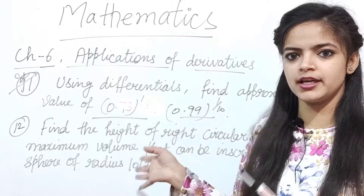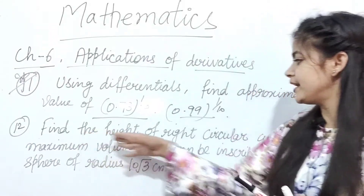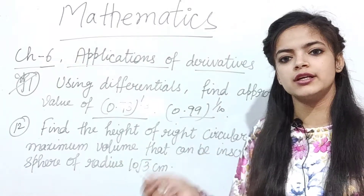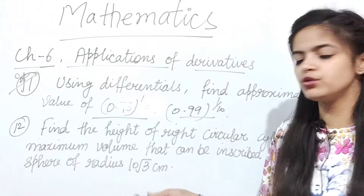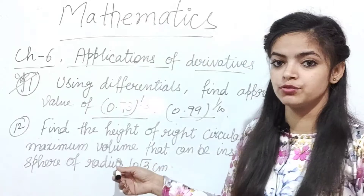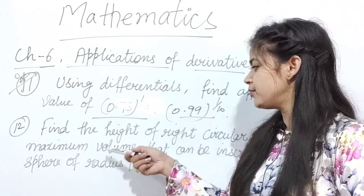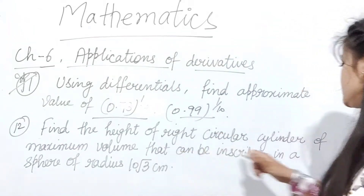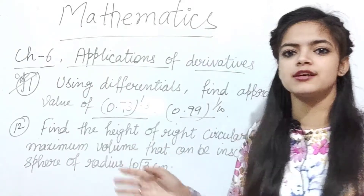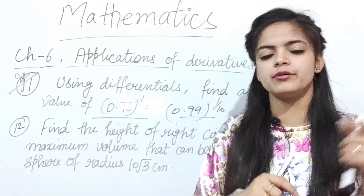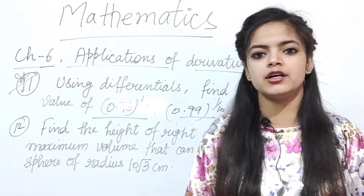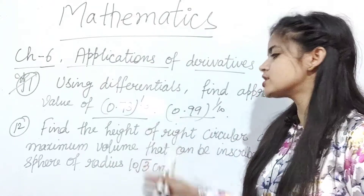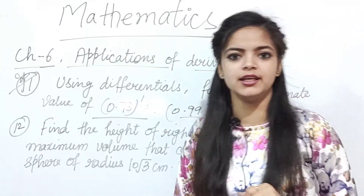Another important question in this chapter involves a statement like: find the height of a right circular cylinder inscribed in a sphere of radius 10 cm. To attempt such questions you need basic formulas from class 9 — sphere area and volume, cylinder area and volume, slant height, cone area and volume, etc. You should know all these formulas to attempt these questions.